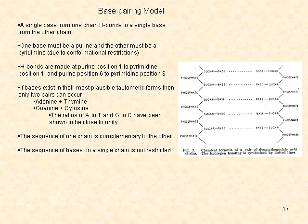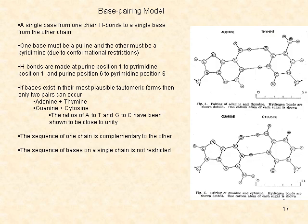In Watson and Crick's base pairing model, a single base from one chain hydrogen bonds to a single base from the other chain. Due to conformational restrictions, one base must be a purine and the other must be a pyrimidine. Hydrogen bonds are made at purine position 1 to pyrimidine position 1, and purine position 6 to pyrimidine position 6. If bases exist in their most plausible tautomeric forms, the only two pairs that can occur are adenine-thymine and guanine-cytosine. This is supported by the observation that the ratios of A to T and G to C are close to unity.